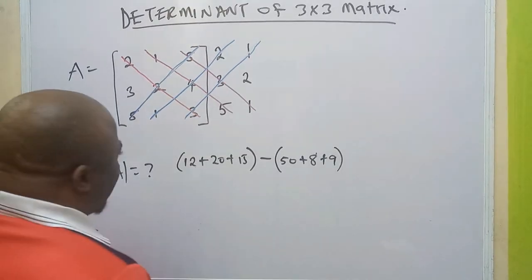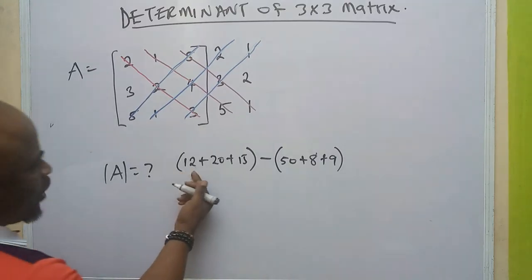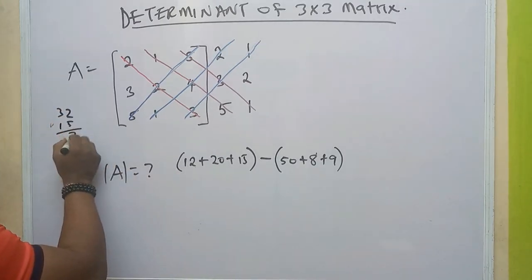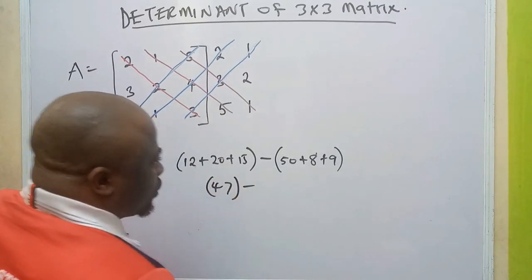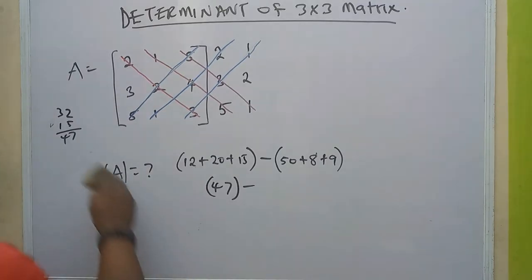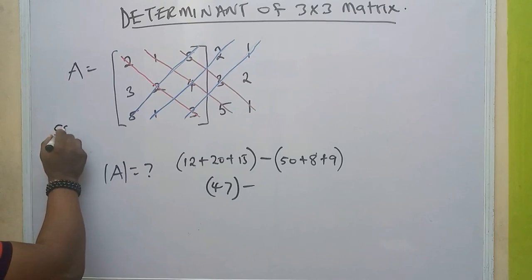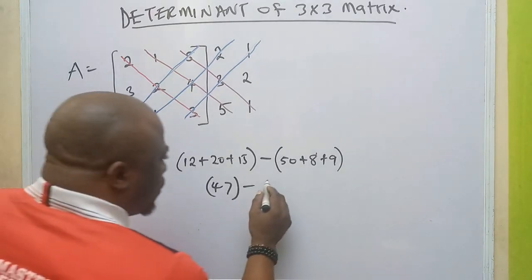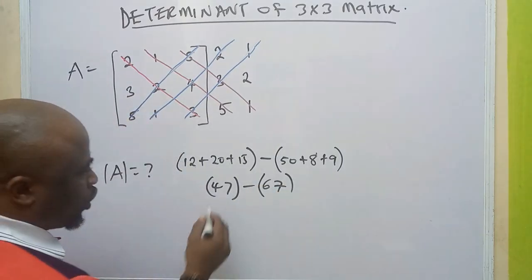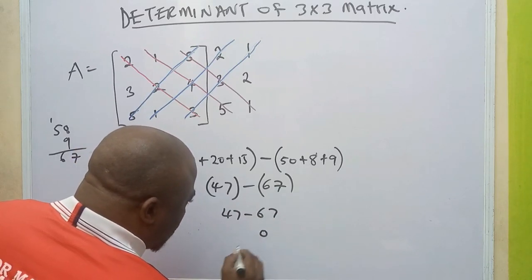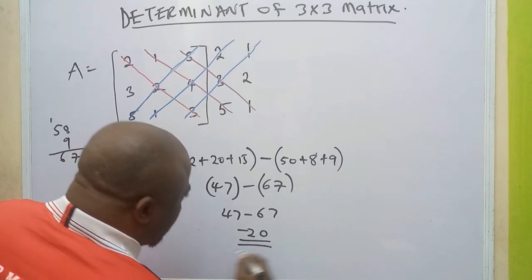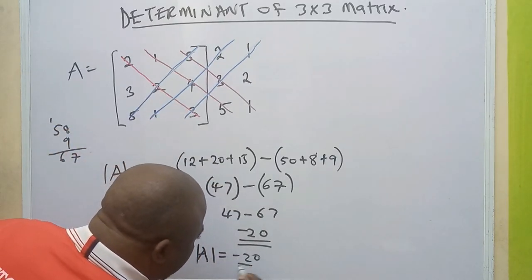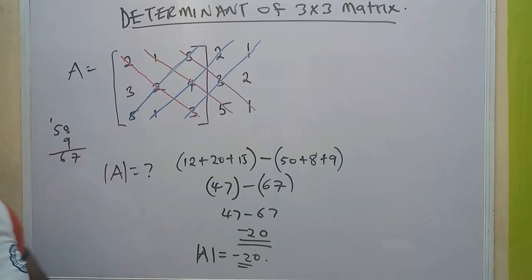Now let's add them up. We have 12 plus 20 is 32, plus 15 is 47. Then the negative part: 50 plus 8 is 58, plus 9 is 67. So what we have is 47 minus 67, which gives us minus 20. The determinant of this matrix is minus 20. That is the first method.